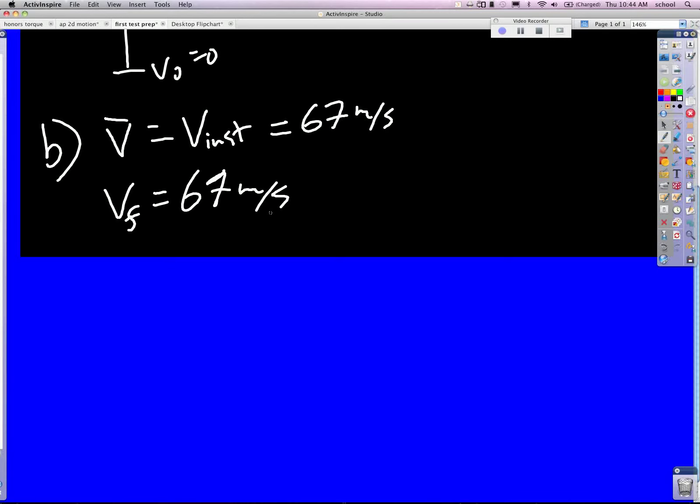So I get t. Did it ask when or where? When. Okay, cool. Where would be what distance, that would be different. So t equals vf over a. So I get 67 meters per second divided by 30 meters per second squared. And that's going to give me something like 2.2 seconds.